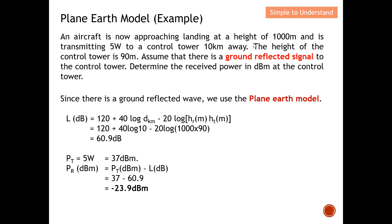Here is an example. An aircraft approaching landing is at a height of 1000 meters and is transmitting 5 watts to a control tower 10 kilometers away. The height of the control tower antenna is 90 meters. Because there is a ground-reflected signal, we must use the plane earth model — we cannot apply the free space path loss model, which requires only a single direct line-of-sight. We need to determine the received power in dBm at the control tower.